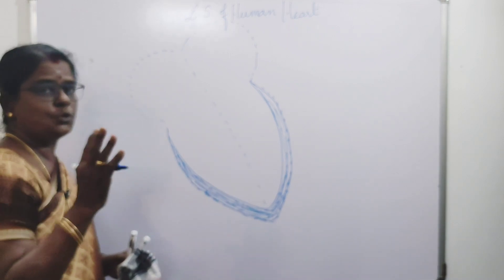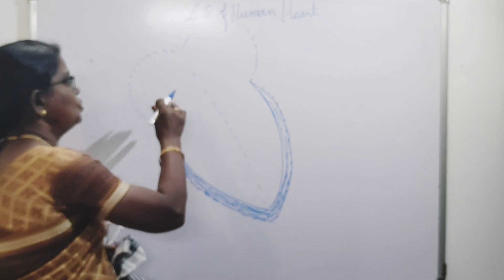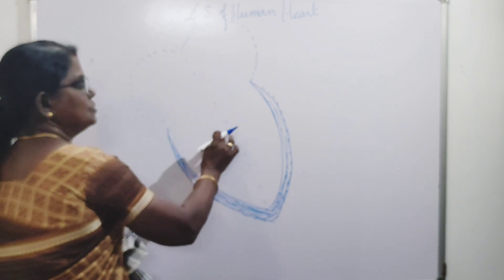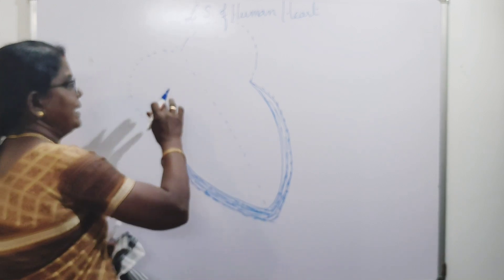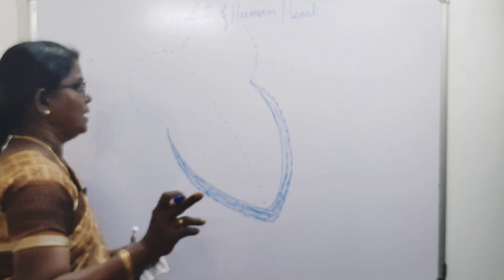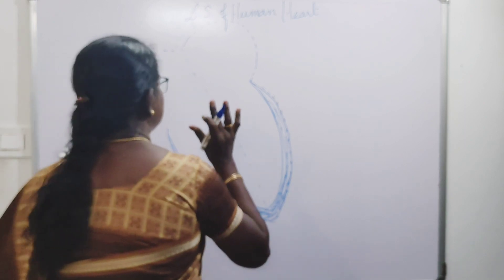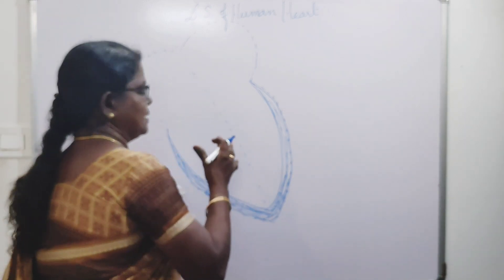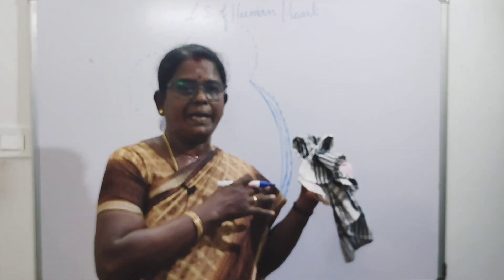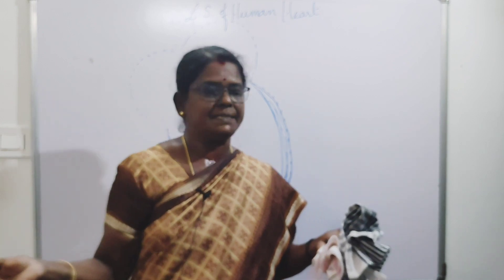The human heart has four chambers — we have a four-chambered heart: two atria and two ventricles. Atrium is singular, atria is plural. So always consider: in the diagram it looks like this, but our heart is kept like this. In the diagram, this side is the left side and this side is the right side.